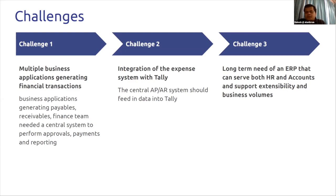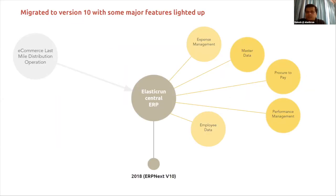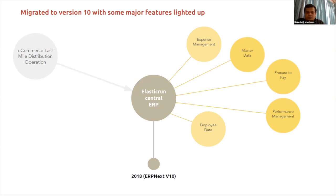Another big area we wanted to automate was our HR processes. We didn't want two different ERPs — one for HR and one for accounts — and then figure out how to mix and match master data across them. So we decided to move to the latest version of ERPNext, which was version 10 at the time. We brought in Pavan from Open E Technologies, who helped us evaluate our current system, define our chart of accounts, and determine what all should be there.